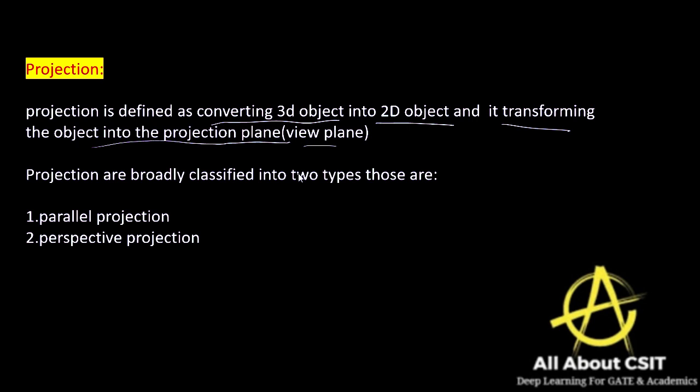When you place any object and want to see it, you observe which face is visible. Whenever you place a light on that object, which face appears on the view plane is the main thing — how the 3D image is projecting onto the view plane. That is projection: converting the 3D object into a 2D object and transforming it into the projection plane.